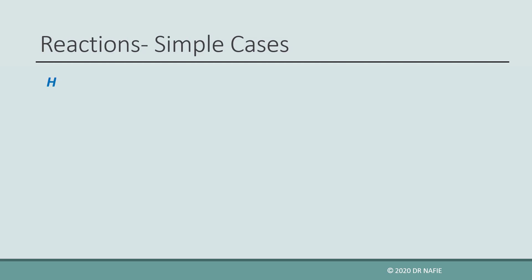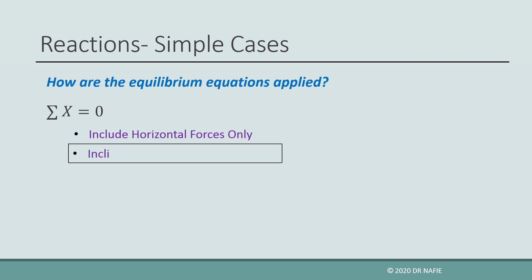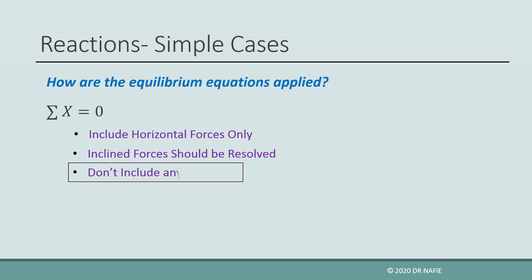For sigma x equals zero, we only include horizontal forces. The sign of the force is positive if it is pointing to the right. If we have an inclined force, we have to resolve it into horizontal and vertical components and only include the horizontal component in the equation. We do not include any moments in this equation.